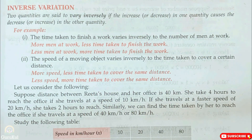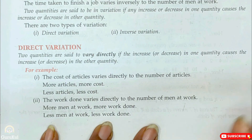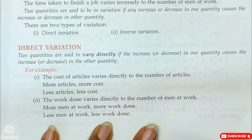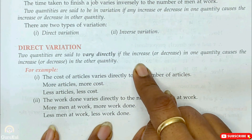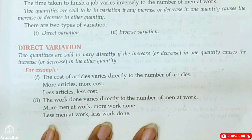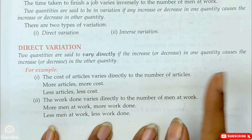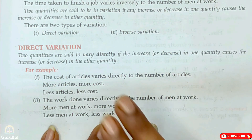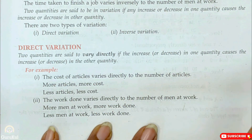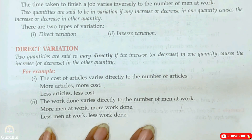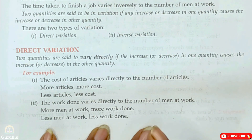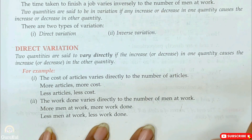Let me recall what direct variation was. In direct variation, if one quantity increases, the other also increases, and if one quantity decreases, the other also decreases. So this is the difference between direct variation and inverse variation. For instance, more pens will cost more, and less pens will cost less. I hope that is clear. Now let us proceed.